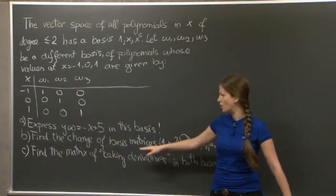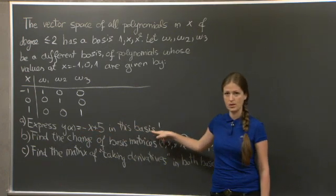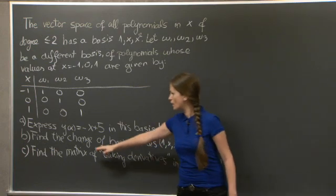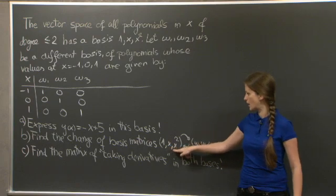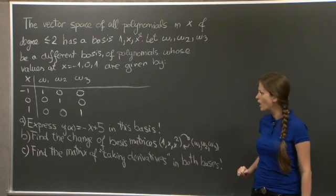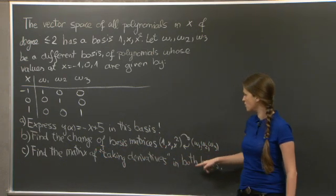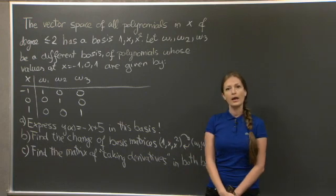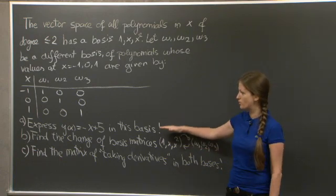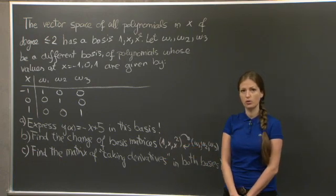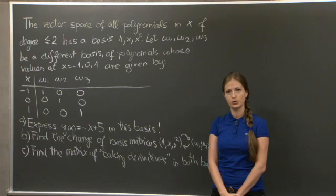We're asked to do the following. We're asked to express this polynomial, so y of x is minus x plus 5, in this basis w1, w2, w3. We're asked to find the change of basis matrices between these two bases, 1, x, x squared, and w1, w2, w3. And finally, we're asked to find the matrix of taking derivatives, which is a linear map on this space, in both of these bases. And let me give you an extra level of challenge, which is to try to do as much of this as possible without explicitly finding w1, w2, and w3. I'll let you think about the problem, and then you can come back and compare your solution with mine.